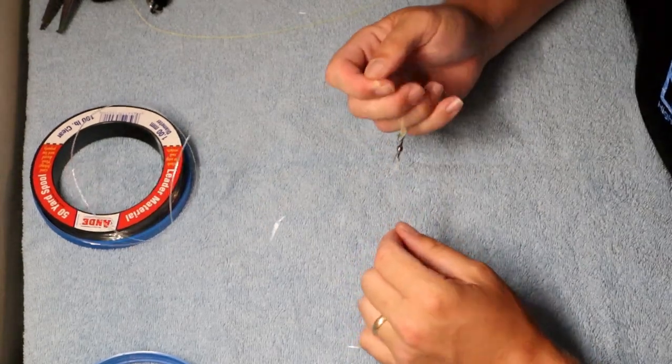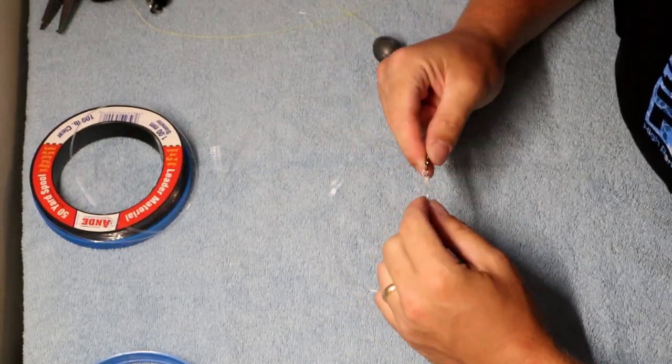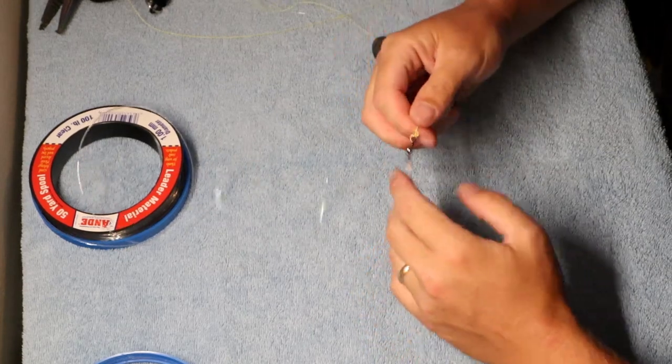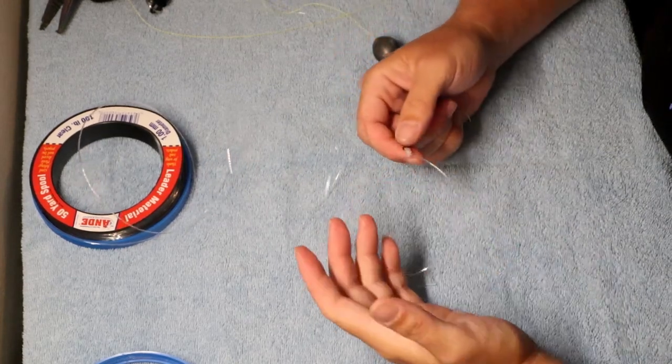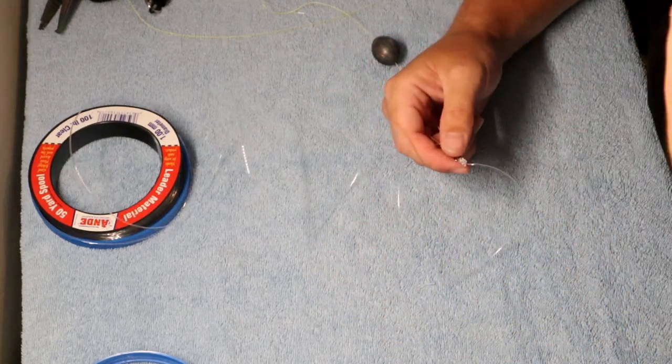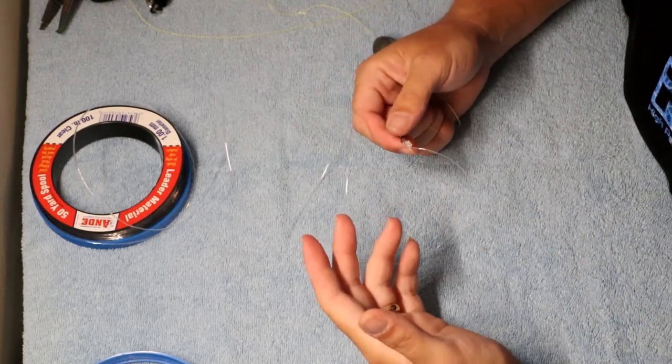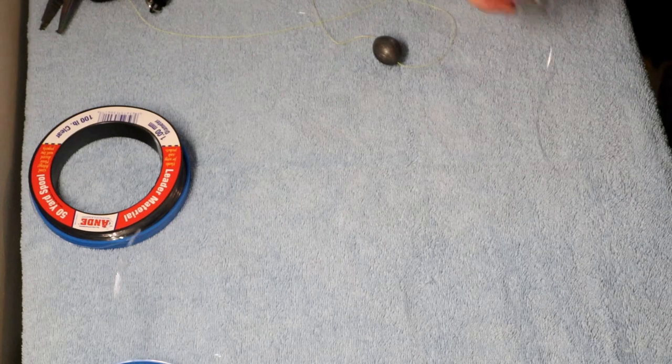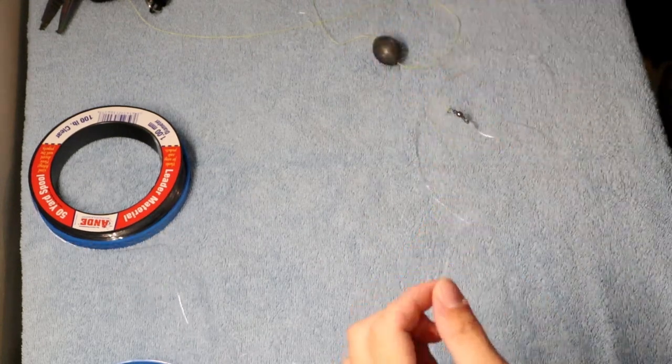Now for the length of the leader, normally I do about five feet, four to five feet typically. You can go a little bit longer if you want or you can go a little bit shorter, but I typically stay at about five feet. Now I'm not going to pull this out to five feet in length; I'm going to pull it out to probably just a little over a foot.